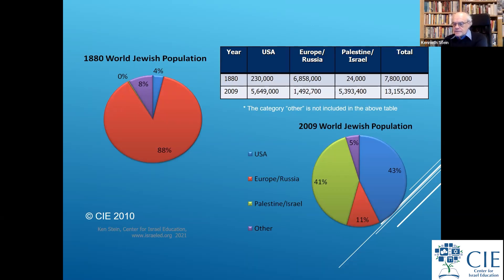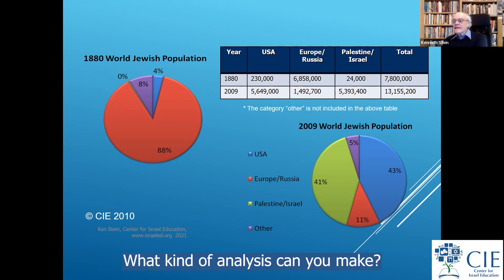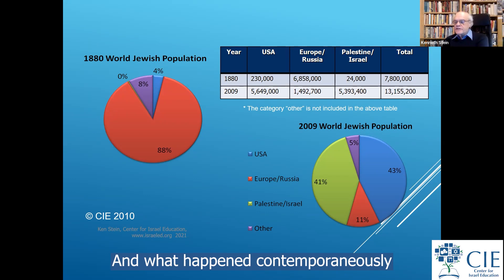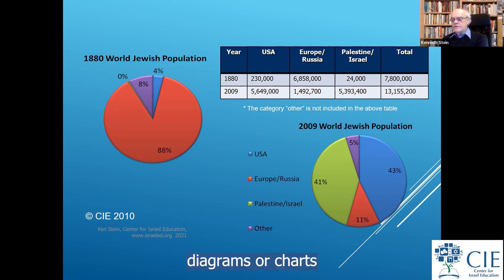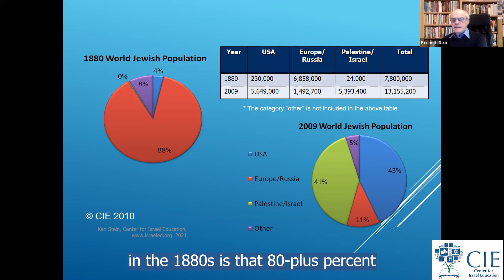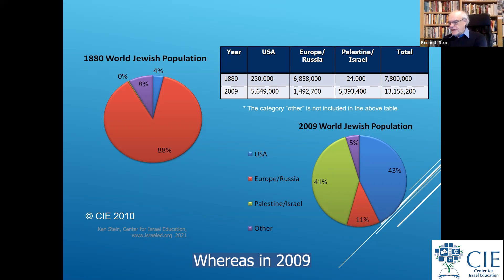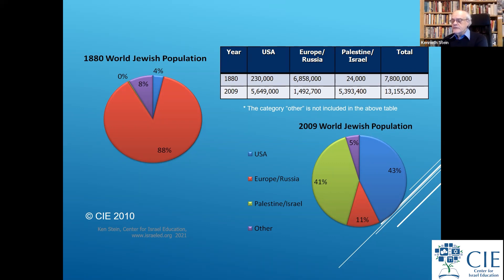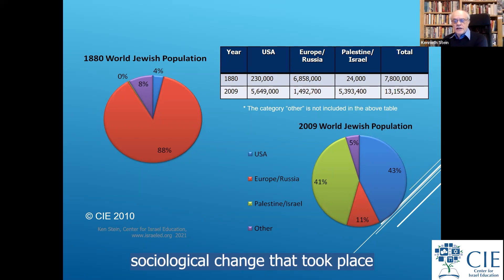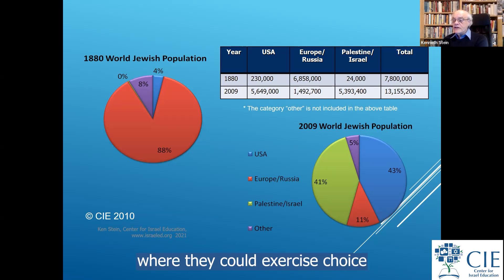If I drop this chart in front of you — what do you see? What kind of analysis can you make? What happened contemporaneously in the 1800s that would tell you something about Jewish identity and the change in Jewish sociology? For me, this is one of the most important diagrams I've put together. In the 1880s, over 80% of the Jewish population was living in non-democratic settings. Whereas by 2009 — and if I updated this to the present — you'd find that 85% of world Jewry lives in democratic settings.